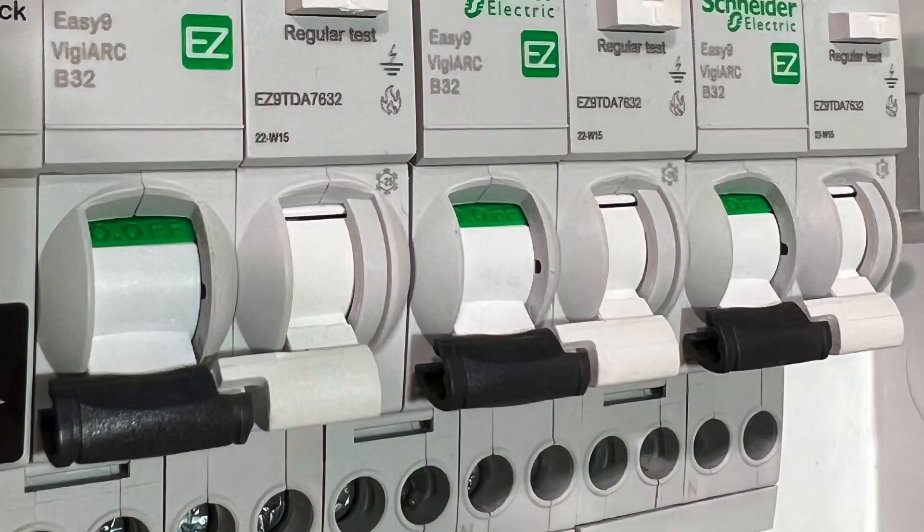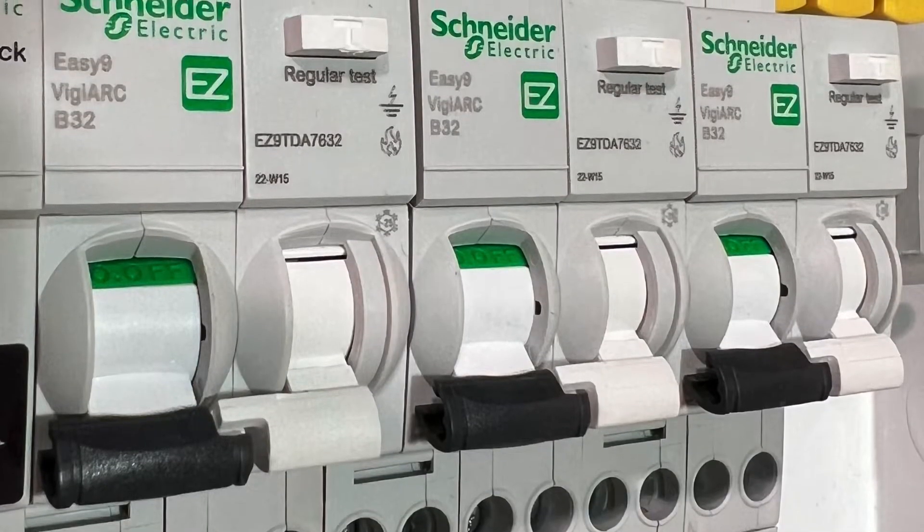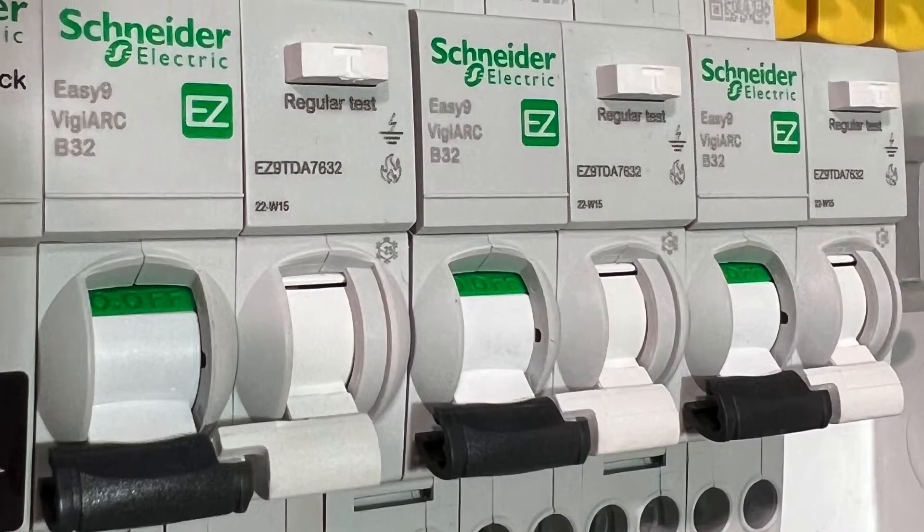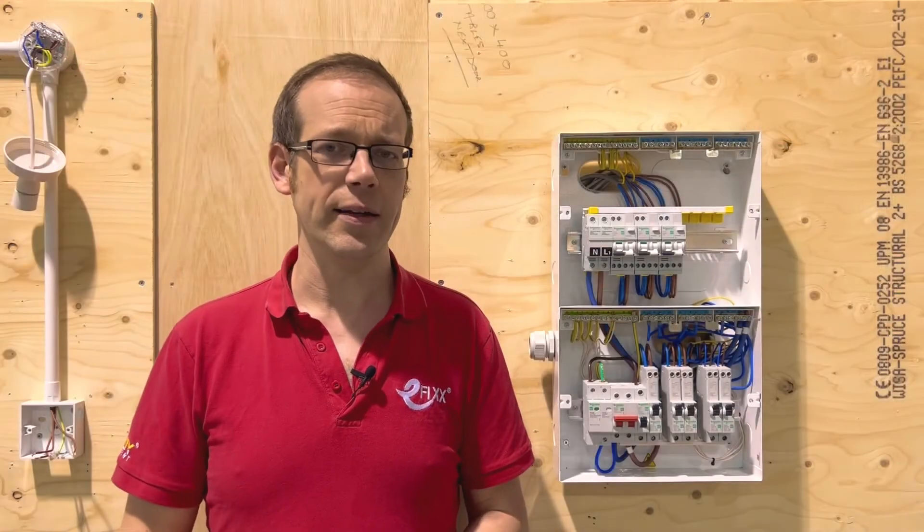For example this one here from Schneider Electric is a combined MCB, RCD and AFDD all in one unit. So where should we be installing these?